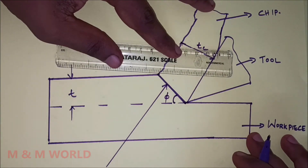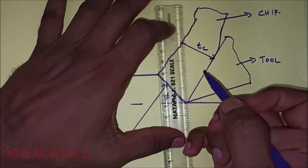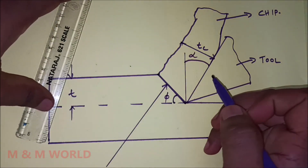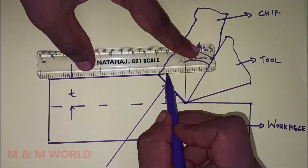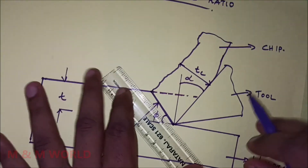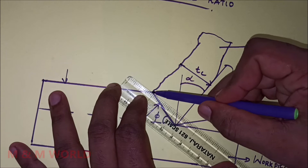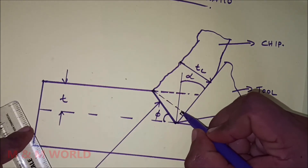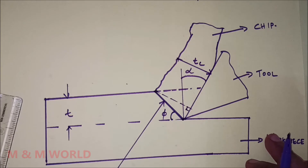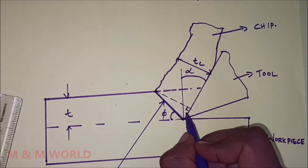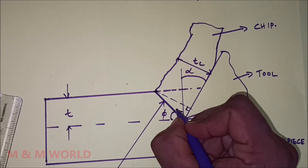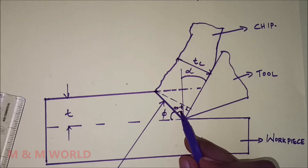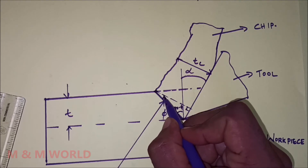This angle is alpha — it is the back rake angle. Now extending this and drawing a perpendicular: this angle corresponds to Tc, this is 90 degrees, this angle is phi, this angle is alpha, so this angle will be equal to 90 minus phi.